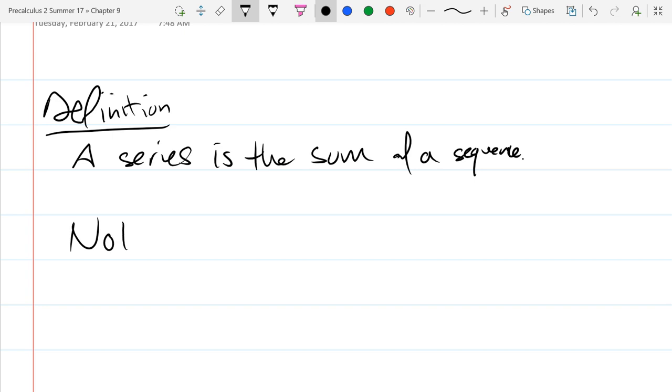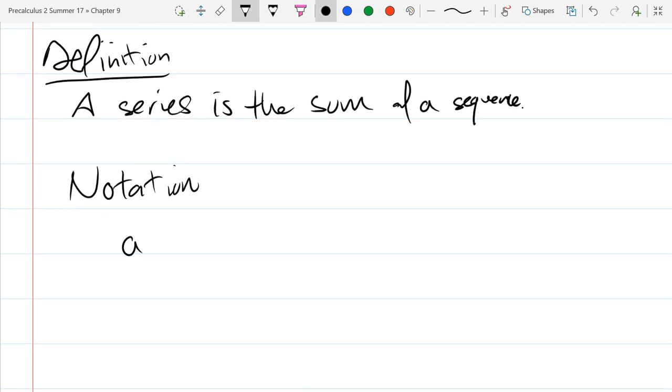So our notation could be a₀ + a₁ + a₂ + ... + aₙ. Now basically the commas were replaced by plus signs, obviously. That should not be a surprise.